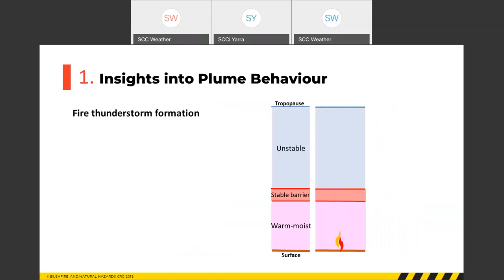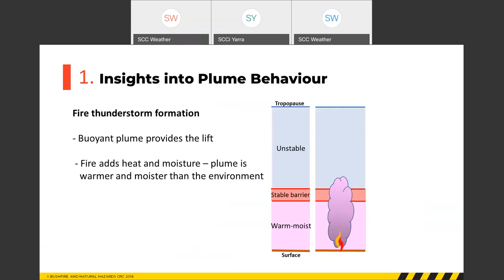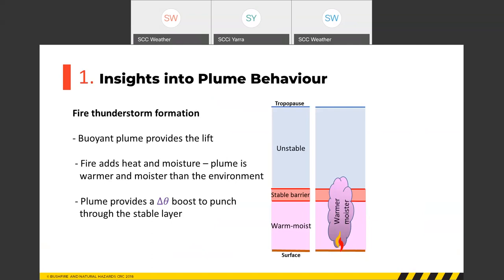The main difference with a fire thunderstorm or Pyro CB is that the fire provides the lift — the buoyancy of the smoke plume. The plume also adds heat and moisture, so it's a little warmer and moister than the environment. This means you might have an environment that is not unstable for conventional thunderstorms, but by adding the extra heat and moisture you can turn it into an environment that is unstable for Pyro CB. The plume provides a buoyancy boost that allows it to punch through the stable layer.